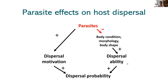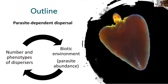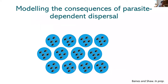Next I'll tell you about the arrow in the other direction: host dispersal has the potential to influence the biotic environment — in this case, parasite abundance. To test this question, we developed a model — myself in collaboration with Alison Shaw, faculty at the University of Minnesota.